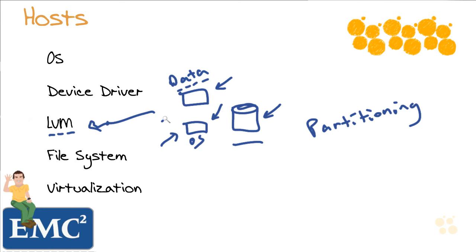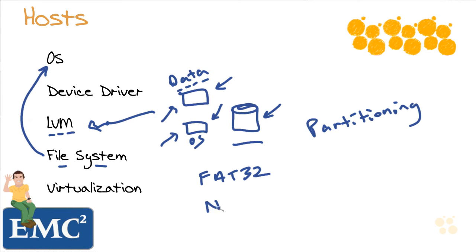When you partition your logical volumes, you need to put a file system in place that the operating system will recognize. Common examples are FAT32 in a Microsoft Windows environment, or NTFS — an improved file system that Microsoft Windows offers — or the Unix file system, UFS. A file system gives you a logical way to work with all the data you have stored, organizing it into directories, sub-directories, and files.